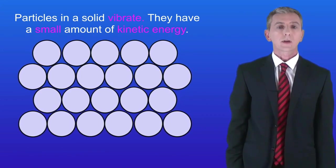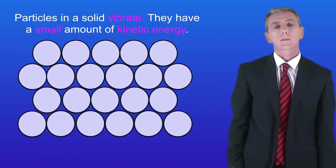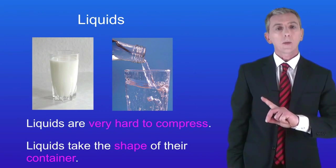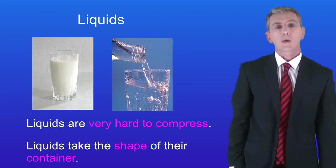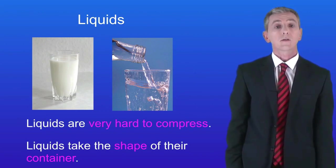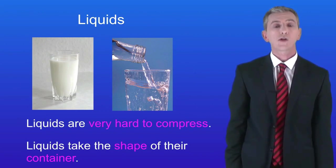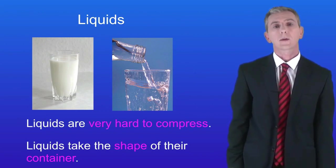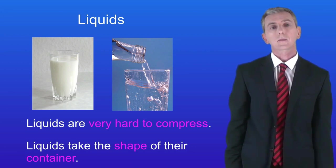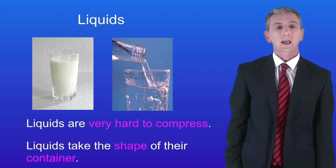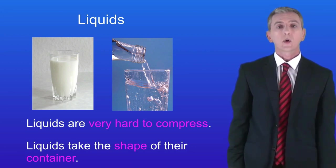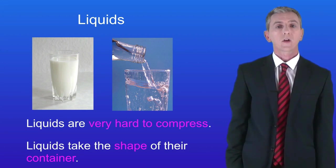Now we are going to take a look at the properties of liquids. Here are a couple of liquids and the first key property is that liquids are very hard to compress if you squeeze them. Secondly, liquids always take the shape of their container. In other words, liquids can flow from place to place.